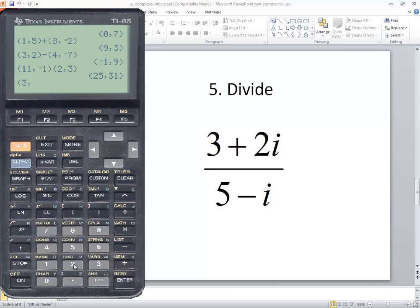So I'm going to do beginning parentheses, three, comma, two, closing parentheses, divided by beginning parentheses, five, comma, negative one, closing parentheses, and then press enter.